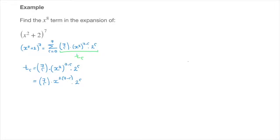Simplifying a little further leads to the binomial coefficient 7 choose r, times x to the power of 2 times 7, which is 14, minus 2 times r, which is 2r, times 2 to the power of r.